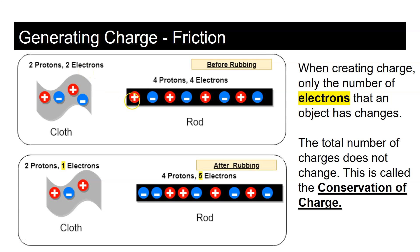Here's a demonstration. We have a cloth with two protons and two electrons, and a rod with four protons and four electrons. At this point, both objects are neutral.